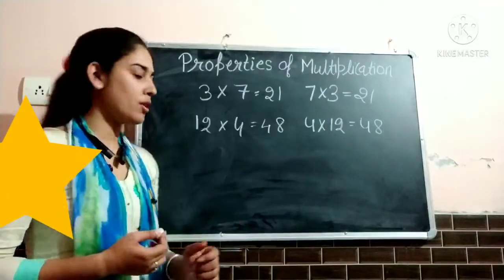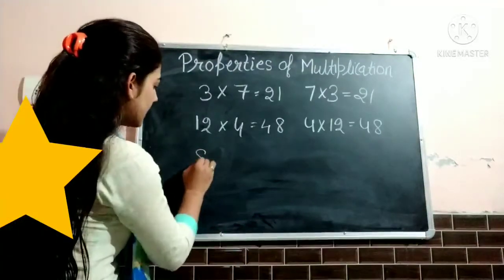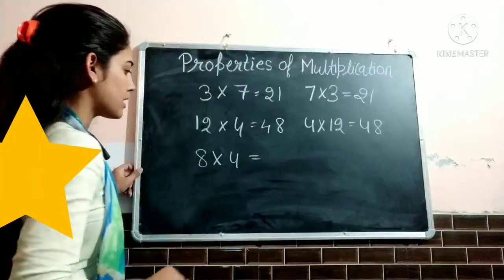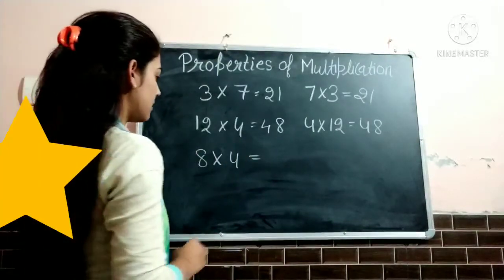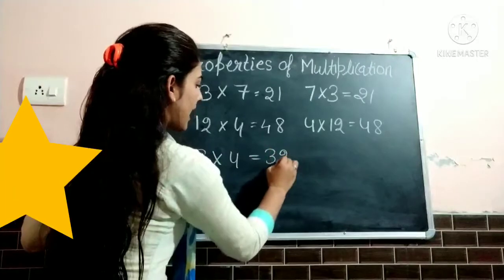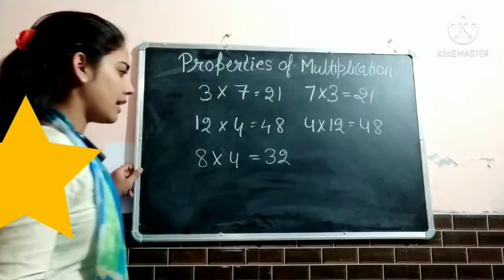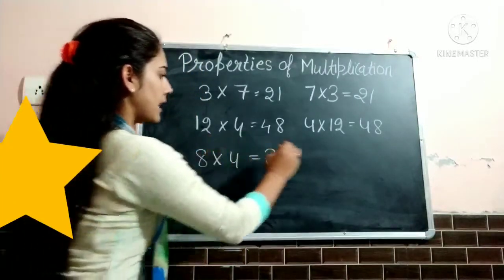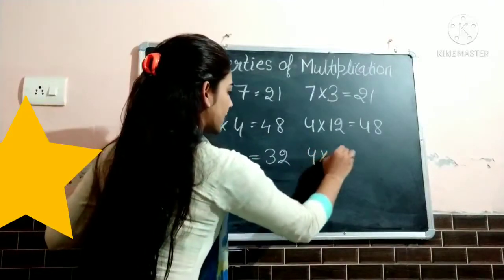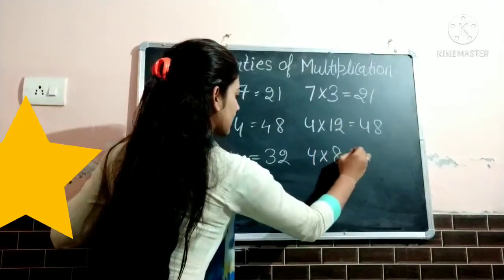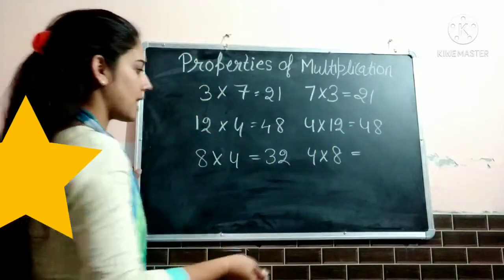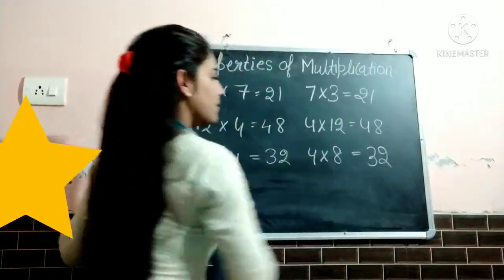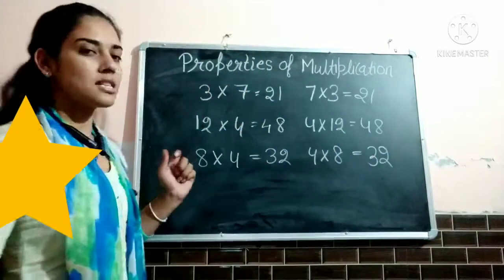Let us take one more example. 8 multiply 4 — 32. And if we will change the order, we will write firstly 4, and after that 8 — again 32. So again the product is same. So this is the property.